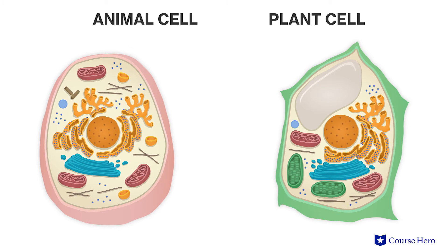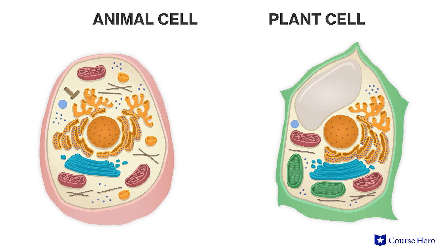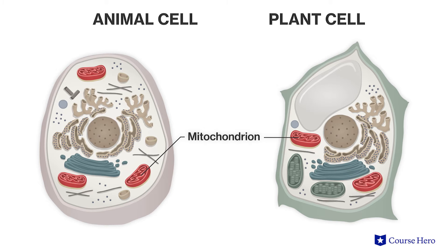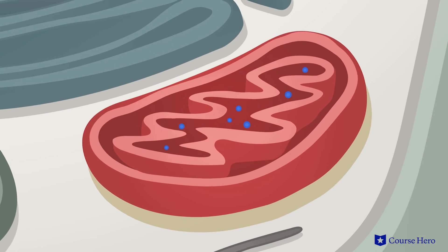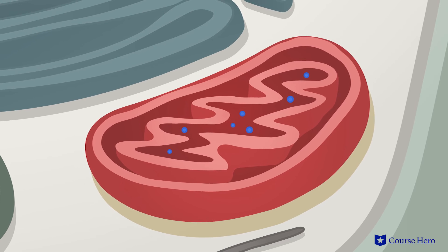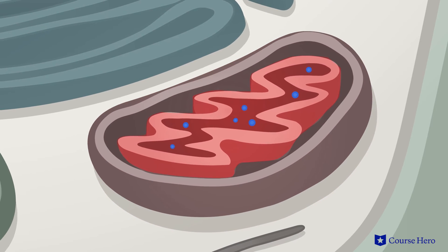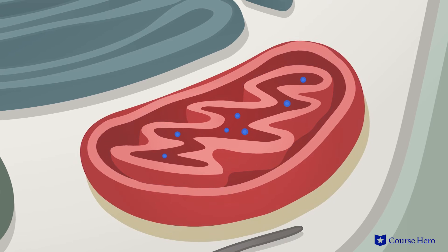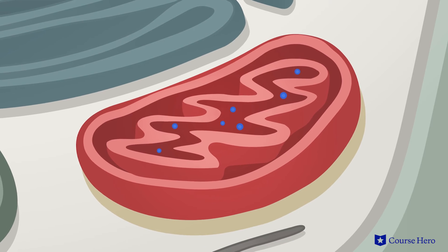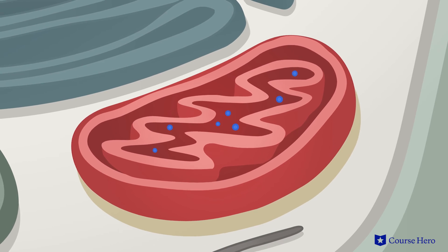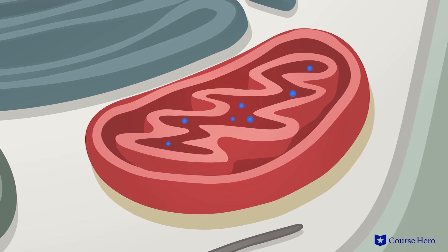Often called the power plant of eukaryotic cells, a mitochondrion is an organelle that changes energy from food into ATP, a form of energy that the cell can use by the process of cellular respiration. A mitochondrion has a smooth outer membrane and an inner membrane that is highly folded. Mitochondria also have their own DNA and can replicate independently of the cell's replication.